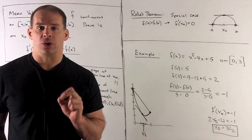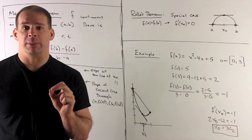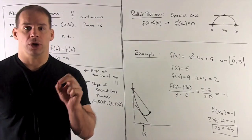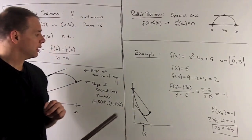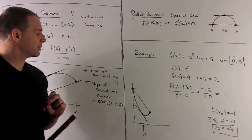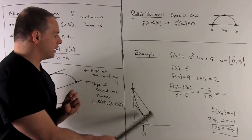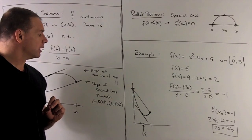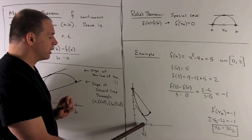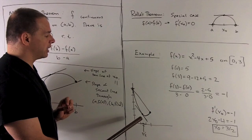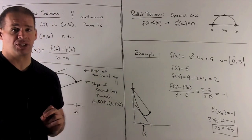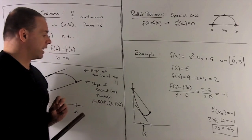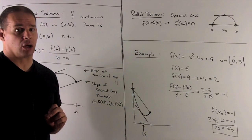Looking at the graph — it's a parabola with vertex at x = 2. If we draw in the secant line through the endpoints, we get a line with slope -1. At x = 3/2, with the scale as drawn, the tangent line has the same slope as the secant line, so those two lines are parallel.